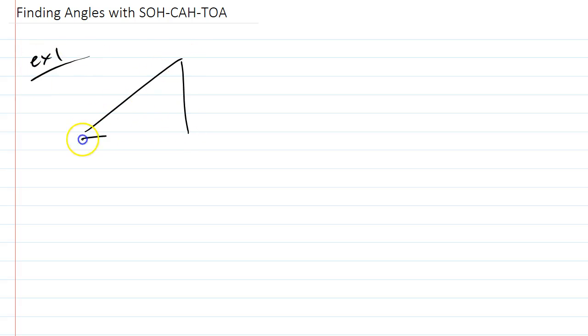Here's an example where I have theta right here, and I have 12 and 36. I want to find my theta. So I think, if I'm standing in this corner, what kind of trig function am I going to have to use? And I think, well, this is the opposite side.